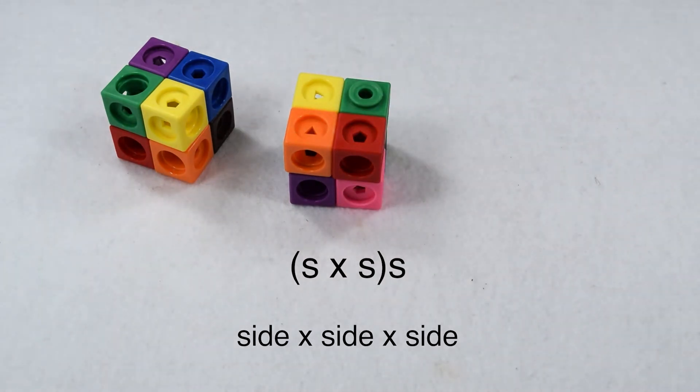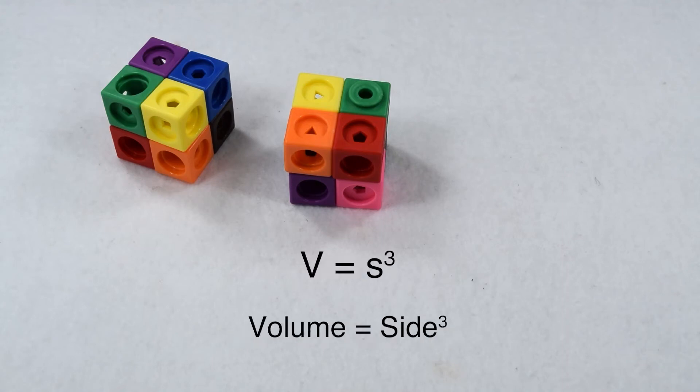Multiplication is commutative so we don't need those parentheses. So volume is simply side times side times side. Using exponents, we can shorten that to volume is side cubed.